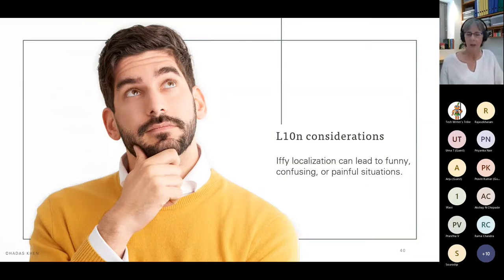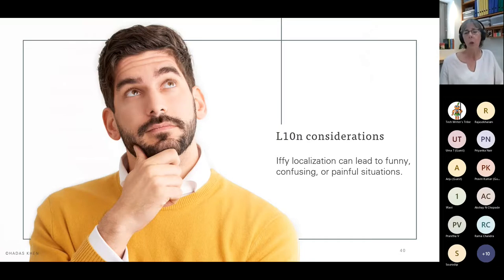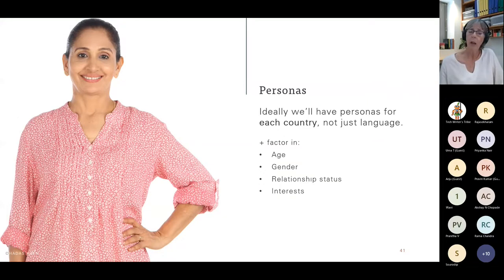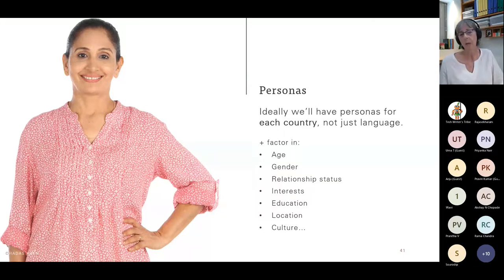Now we'll look at some localization — L10N is the short form — considerations. UX writing and localization considerations overlap in many respects. We want to create personas, ideally for each country and not just for each language. For example, Spanish is the official language in 20 countries, but every country has its own personality. English is the official language in 67 countries, and Canadian English and Australian English both include different terms, terminologies, and even different approaches to the language.